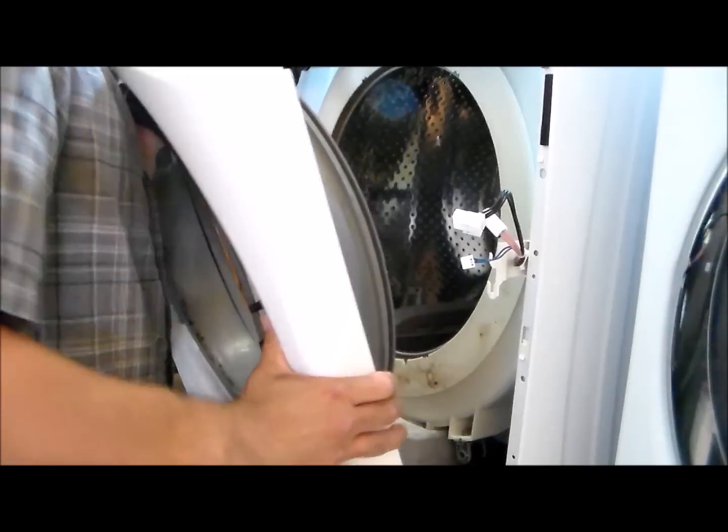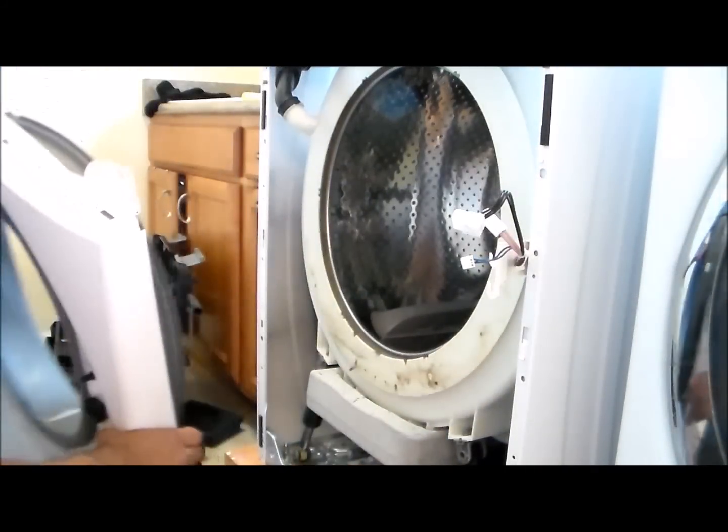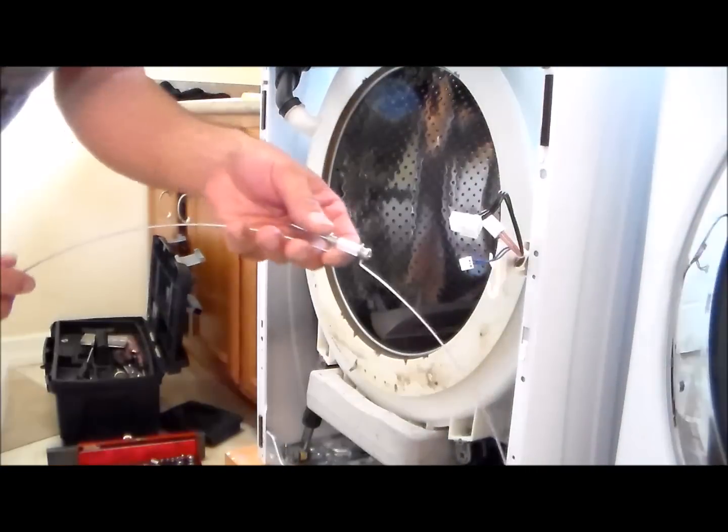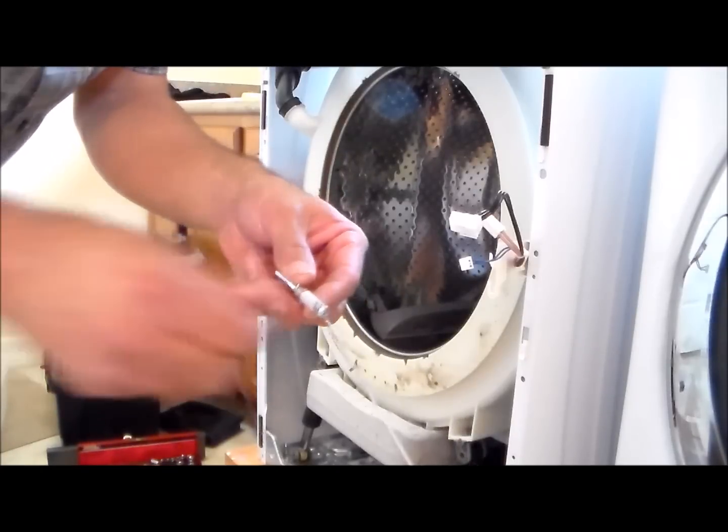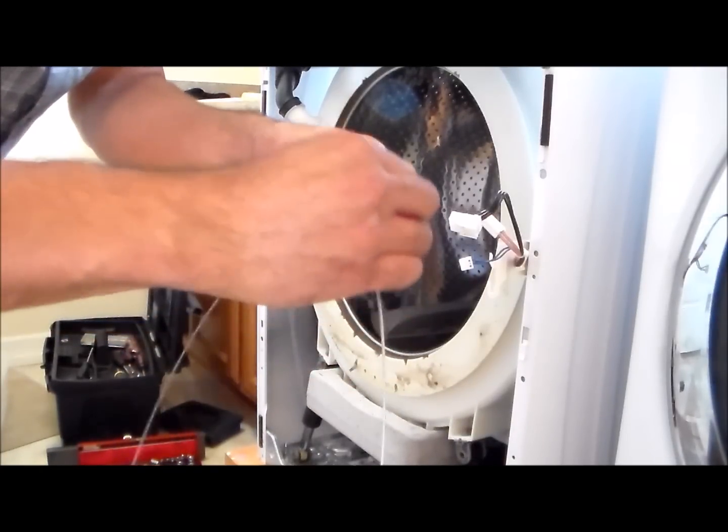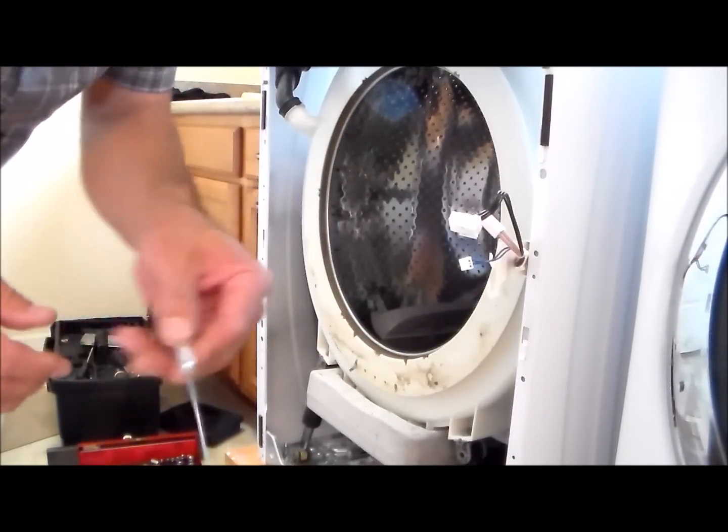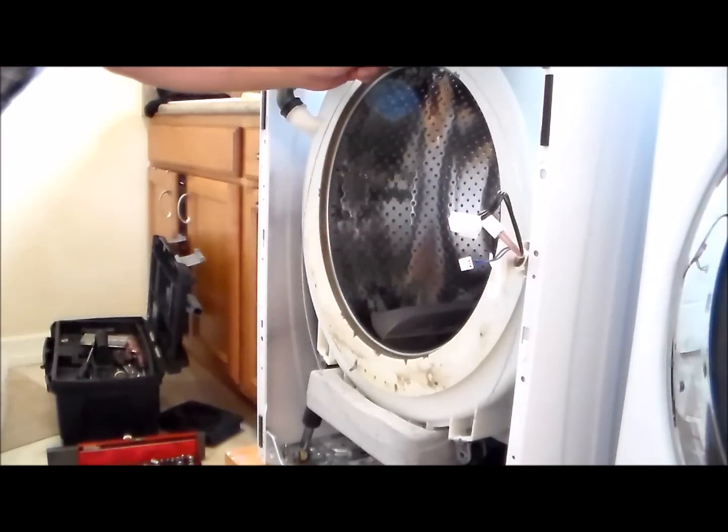All right, now we're able to take that whole front panel off. Now we have that whole front off. Here's a closer look at that clamp I was talking about. It has a screw there that tightens and loosens it, and that was located on the gasket for the washer there that we had to take off.